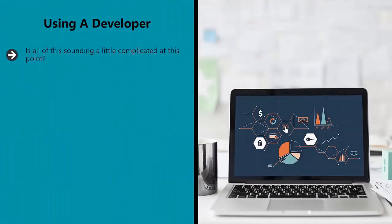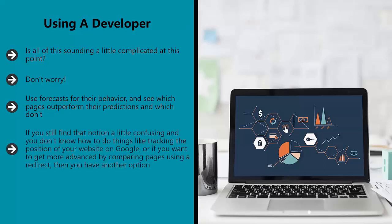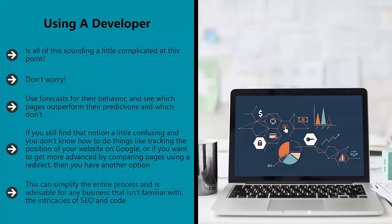Using a developer. Is all of this sounding a little complicated at this point? Don't worry. For the vast majority of business owners, the best option will be simply to use the matched pages test: take two groups of pages, make a few changes to one, and then monitor their performance over time. Use forecasts for their behavior and see which pages outperform their predictions and which don't. If you want to check for significance, then you can run a chi-squared test. If you still find that notion a little confusing and you don't know how to do things like tracking the position of your website on Google, or if you want to get more advanced by comparing pages using a redirect, then you have another option — hire a developer or a marketer to handle the process for you. This can simplify the entire process and is advisable for any business that isn't familiar with the intricacies of SEO and code.